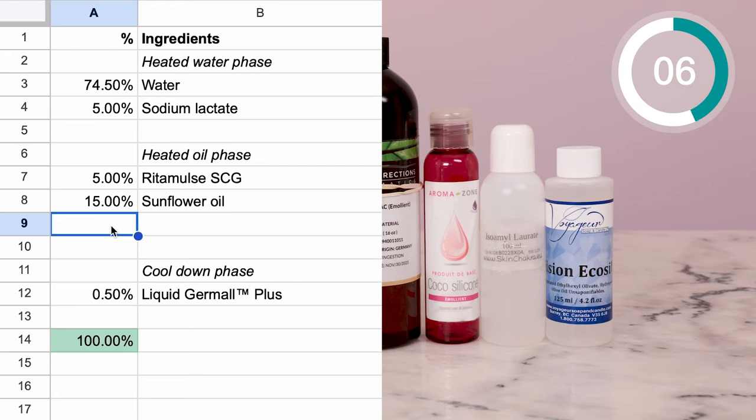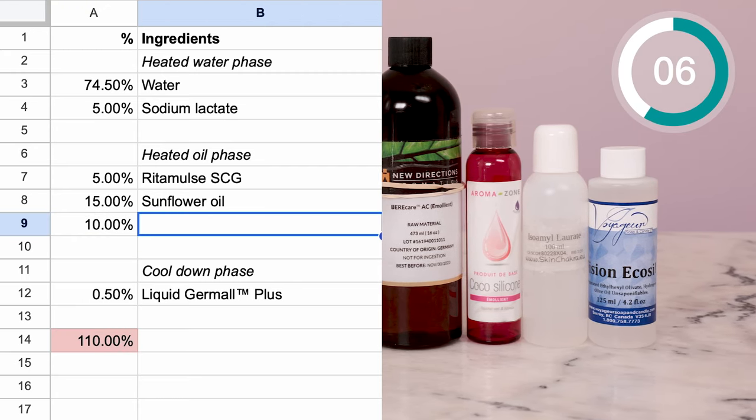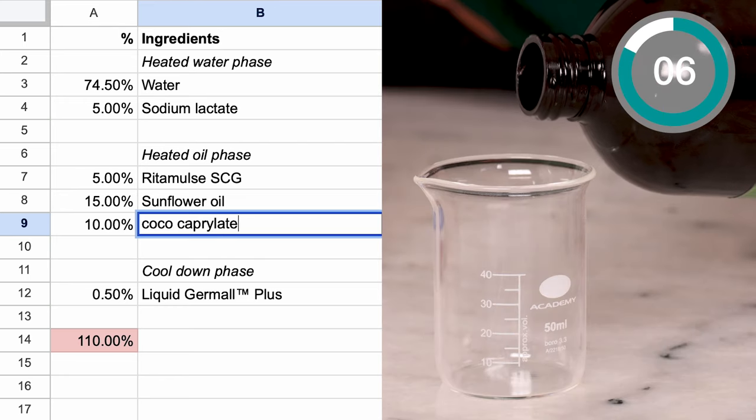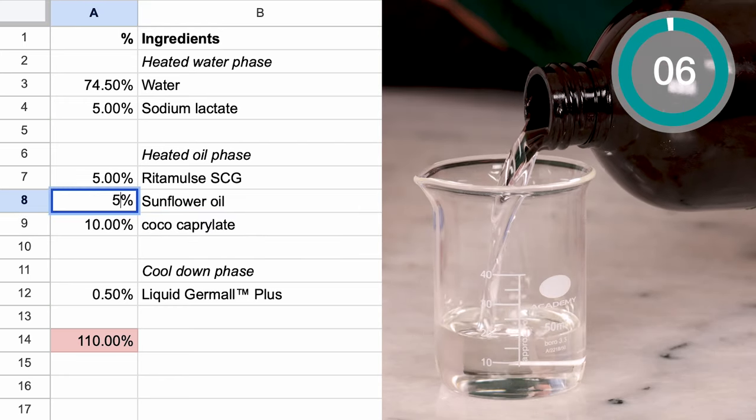For a lighter, faster absorbing lotion, try a trick that the pros use all the time. Use an ester like isopropyl myristate, coco caprylate, or medium chain triglycerides instead of some or all of the liquid oil.